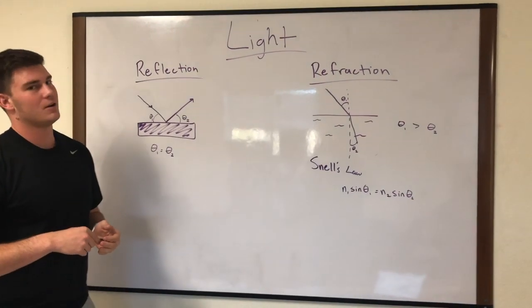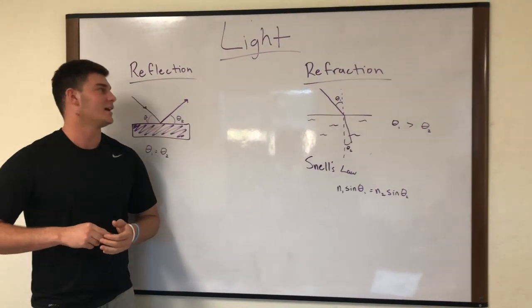Today we're going to be talking about light and light does a lot of things. There are four ways light interacts: it reflects, refracts, scatters, and is absorbed. Today we're going to be talking about reflection and refraction mainly.